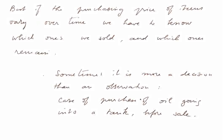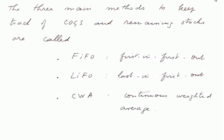Think of the case when we purchase oil going into a tank before we sell it. To decide which barrel of oil was actually sold and which one remained in the tank is a bit specious. The three main methods to keep track of COGS and remaining stocks are called FIFO for first in, first out; LIFO for last in, first out; and CWA for continuous weighted average.